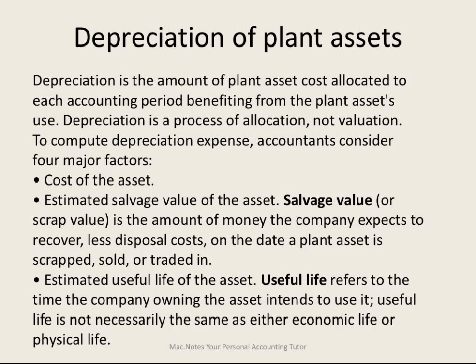To depreciate an asset, this asset will provide or help us earn revenue for more than one accounting period. So we must allocate the cost of that asset to each of those accounting periods in which it has contributed. To do that, we must take into consideration the total cost of the asset, then estimate how much the asset would be worth at the end of its useful life, and how long that useful life is — how many years will it help us earn revenue?